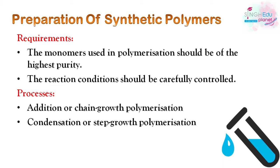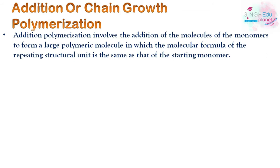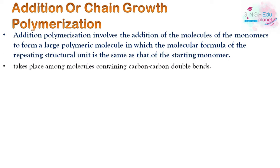Addition or chain growth polymerization involves the addition of monomer molecules to form a large polymeric molecule. The molecular formula of the repeating structural unit is the same as that of the starting monomer. This process takes place among molecules containing carbon-carbon double bonds, which open up during addition or chain growth polymerization.